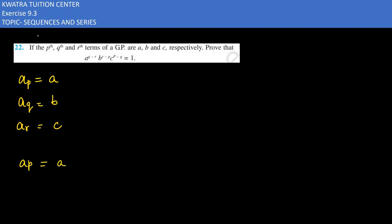It will be nothing but equal to a. A is the first term in GP. When you substitute it, it will be A times r to the power n minus 1, so p minus 1 is equal to a. This is our first equation.